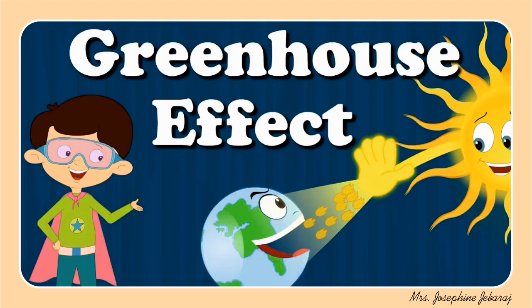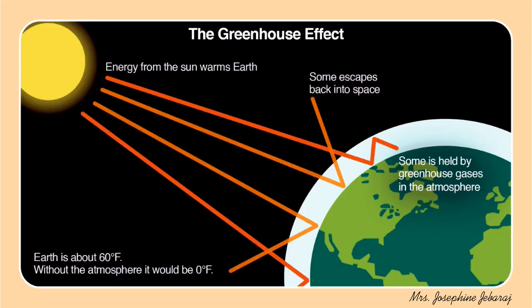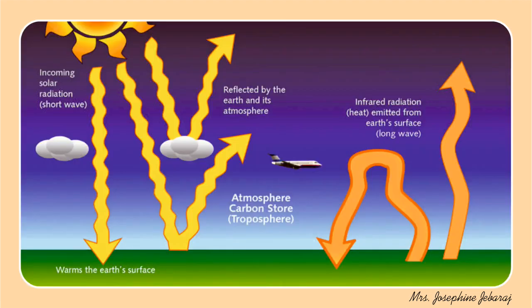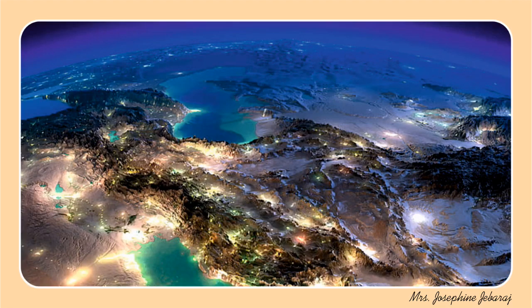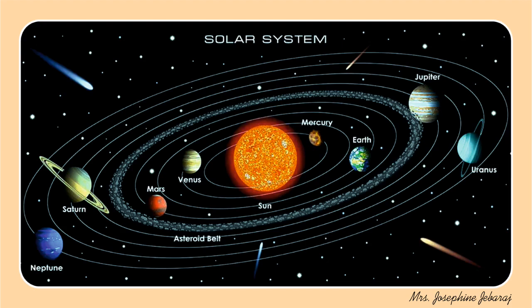Moving on to the greenhouse effect — what is it actually? Water vapour, carbon dioxide, and other gases in the atmosphere trap heat from the sun and warm the Earth. Without this greenhouse effect, the Earth would be too cold for life to exist. Hence, Earth is the only planet in the universe to possess life.